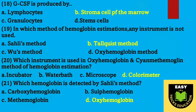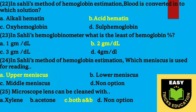Question number nineteen: in which method of hemoglobin estimation is no instrument used? Option B, in the Talquist method, no instrument is used. Question number twenty: which instrument is used in the oxyhemoglobin or cyanmethemoglobin method of hemoglobin estimation? Option D, colorimeter. Question number twenty-one: which hemoglobin is detected by Sahli's method? Option D, oxyhemoglobin.